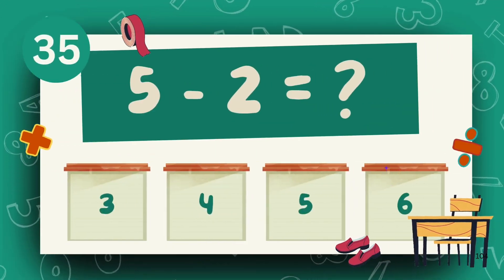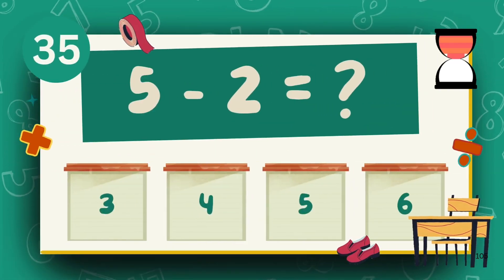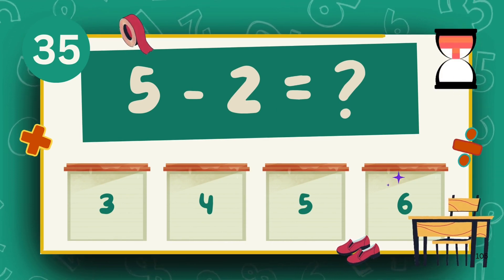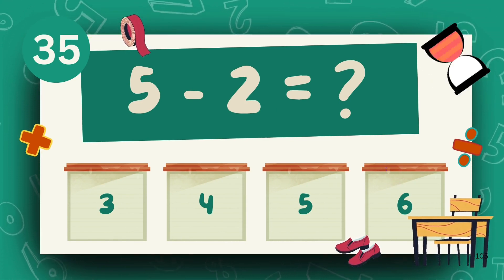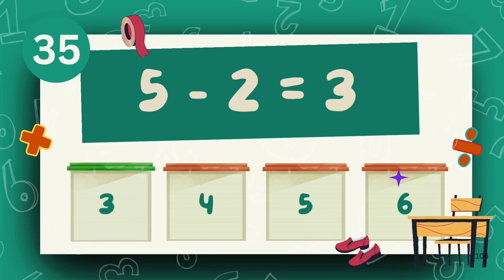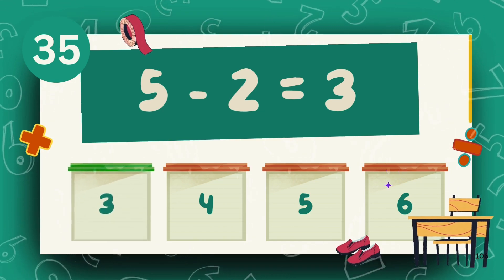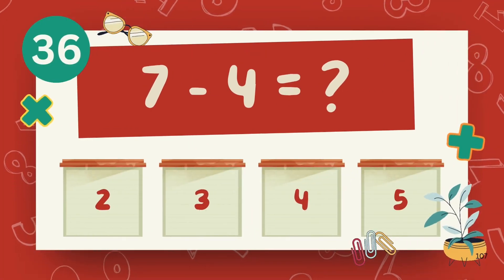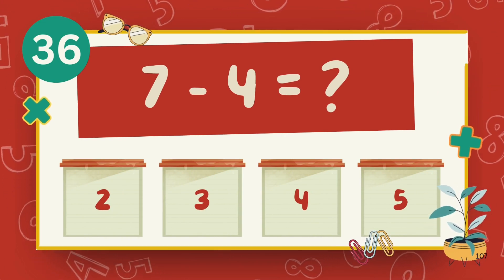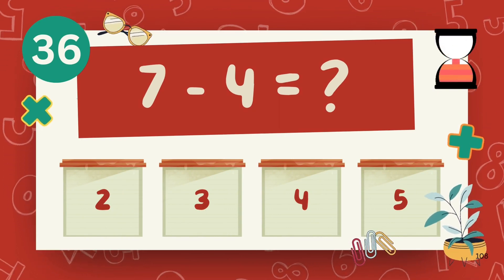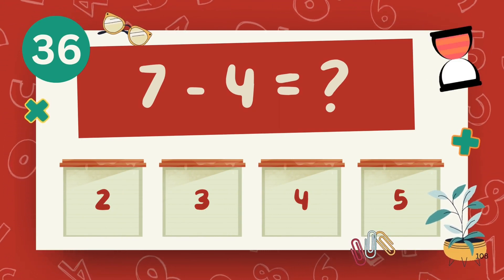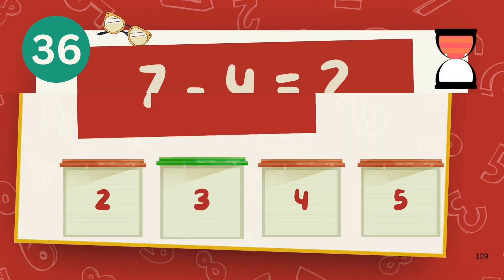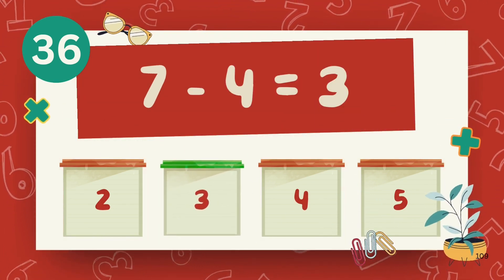What is 5 minus 2? The answer is 3. What is 7 minus 4? The answer is 3.